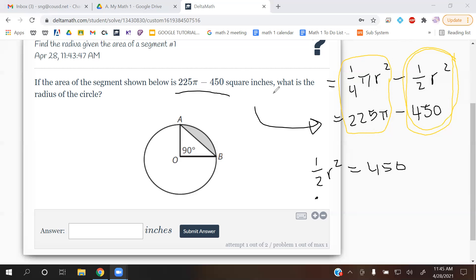Let's get rid of this 1/2 fraction. I'm going to do that by multiplying both sides by 2 because fractions are division problems. So the opposite of dividing is multiplying. That will cancel this out. You will get r² is equal to